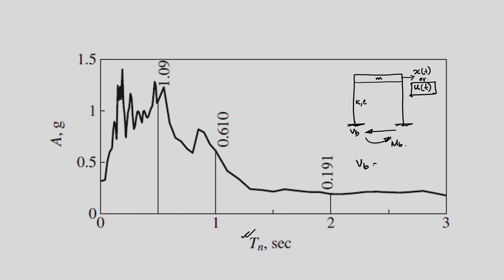The base shear VB is nothing but the stiffness offered by the column times SD. That is the amount of base shear, and the moment we have SD we can find out the base shear. We can also find out the moment, which is H — the height of the column — times VB. That is the quantity we use for design, and that is the reason response spectrum is so useful for designing a structure, because we have already solved the time history response and for every possible value of Tn and eta, we already have the maximum response.